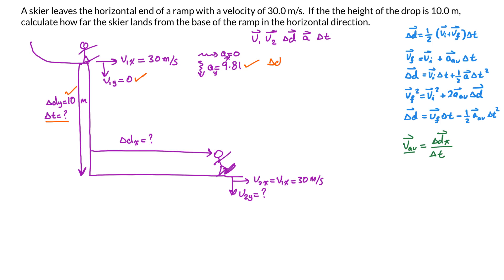The equation is: delta d = v1 * delta t + ½ * a * delta t². I also need to choose a coordinate system. Since most of the motion I've drawn is pointing downward, I'll use down as positive, and right as positive in the horizontal direction. I'll note that all calculations in orange are for the y direction.